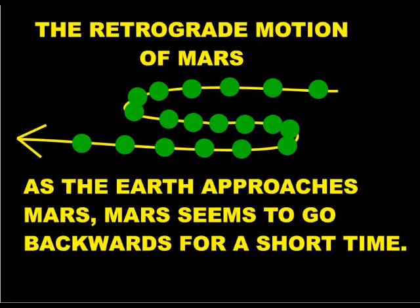However, as the Earth goes past Mars, Mars appears to suddenly go left to right for a short time, before then returning to the normal, right to left motion.